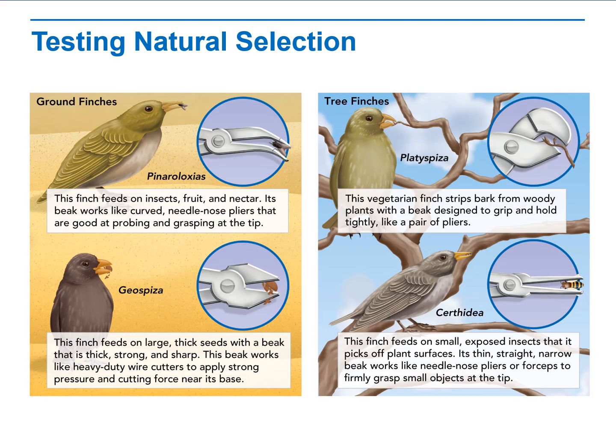One way to gather evidence for evolutionary change is to observe natural selection in action. Most major evolutionary changes took place over millions of years, making it tough or impossible to observe directly. However, some evolutionary change has been observed in labs and in controlled outdoor environments, with organisms from bacteria to guppies. One of the best examples comes from observations on Galapagos finches — fitting, since Darwin first studied them.